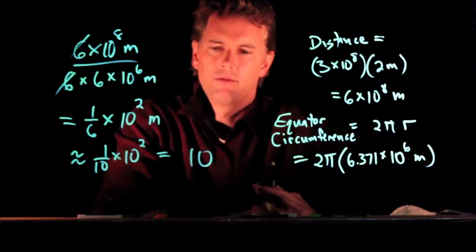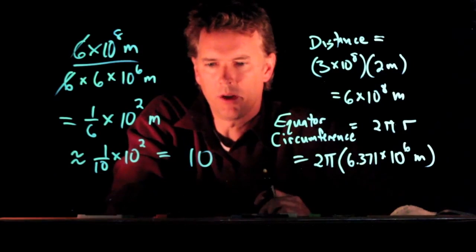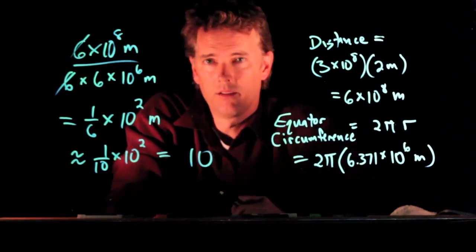Everybody in the US joined hands went around the equator. How many times they would go around? It's 10, roughly speaking.